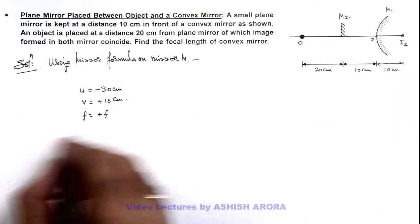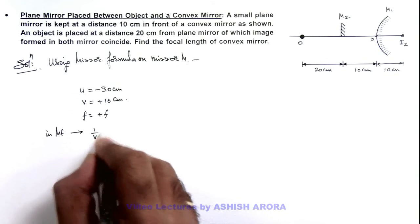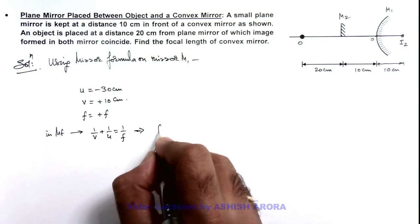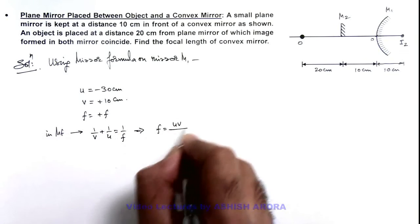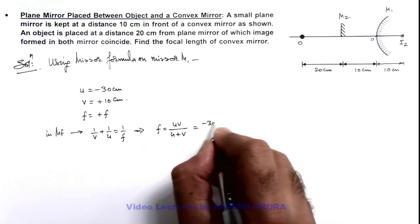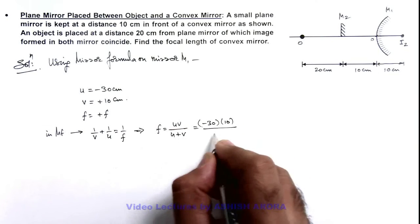In the mirror formula, we use 1/v + 1/u = 1/f. This implies the focal length is uv/(u+v), which will be minus 30 times 10 divided by minus 30 plus 10, which is minus 20.